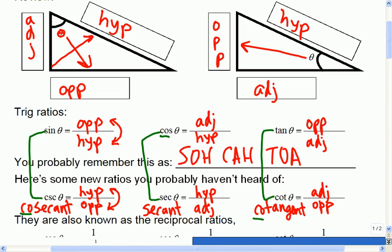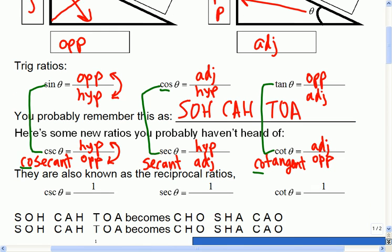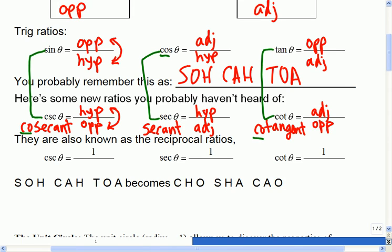I think it works because you only have one co prefix. But here's the other way that you can remember how they're connected. From SOH CAH TOA, now you get CHO SHA KAO.